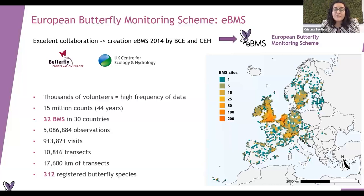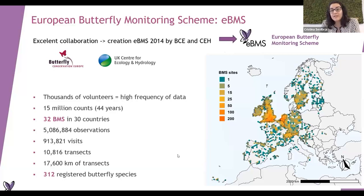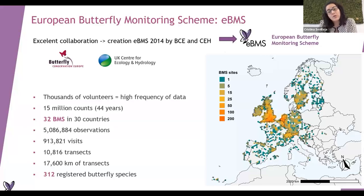There are millions of data points since the 70s, and really large numbers - more than 10,000 transects over these 40 years, so quite a lot. More than 300 butterfly species recorded. There are around 500 species in Europe total, so we are getting there.